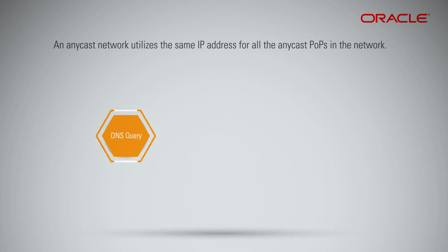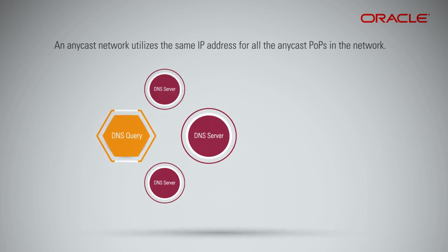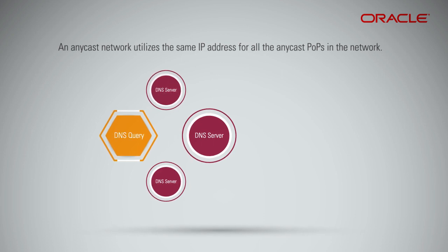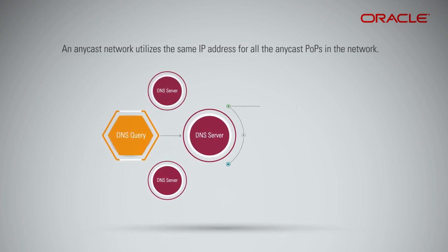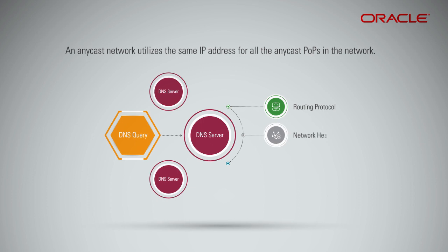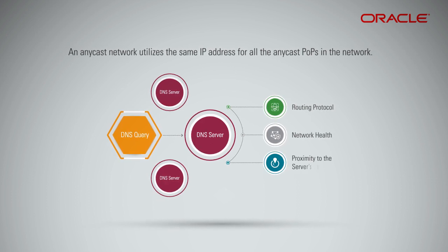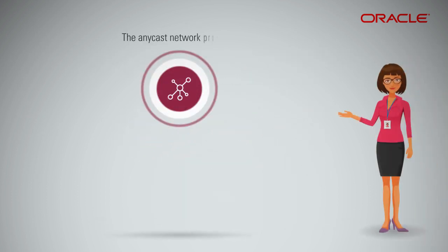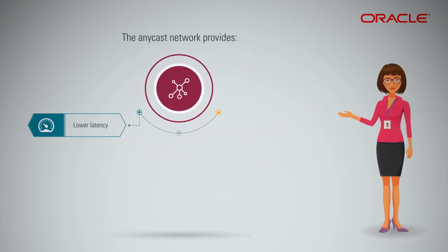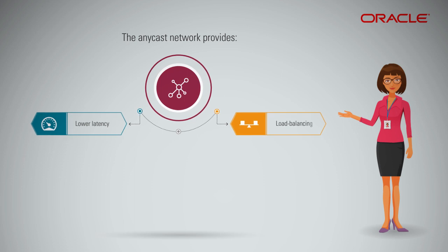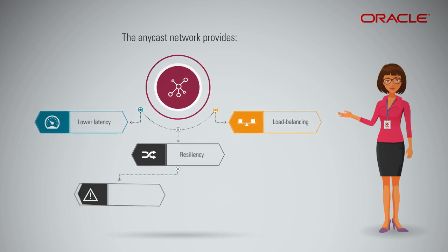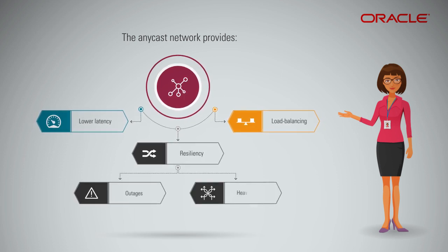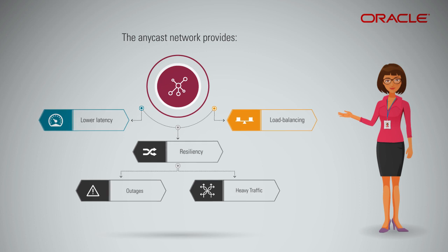When a DNS query is sent, even though all the DNS servers have the same IP address, the request is sent to a specific DNS server based on routing protocol, network health, proximity to the server's locations, etc. The Anycast network provides lower latency, a basic level of load balancing, and resiliency to handle outages or heavy traffic with minimal impact to the customer.